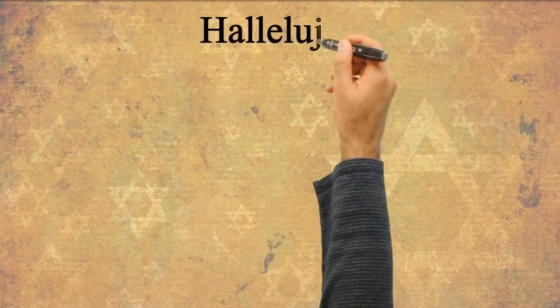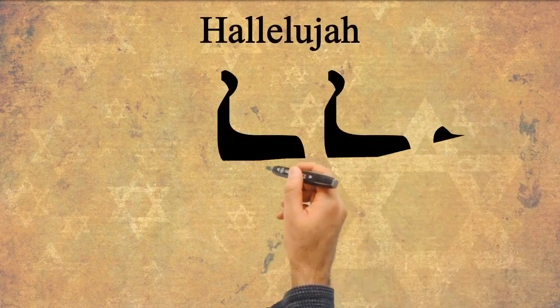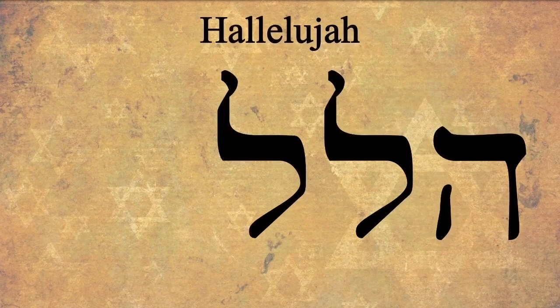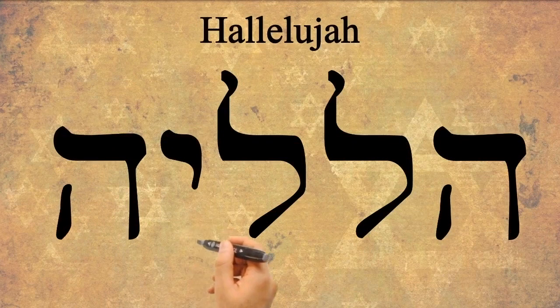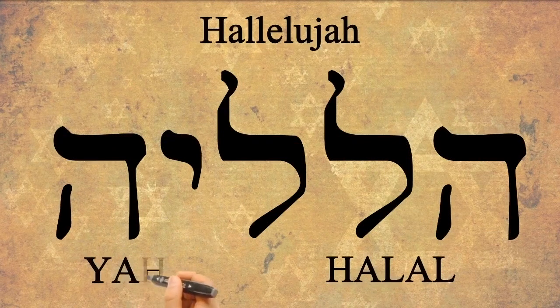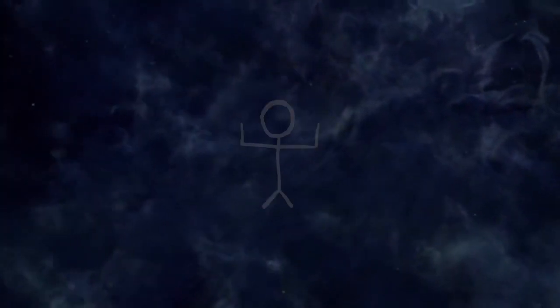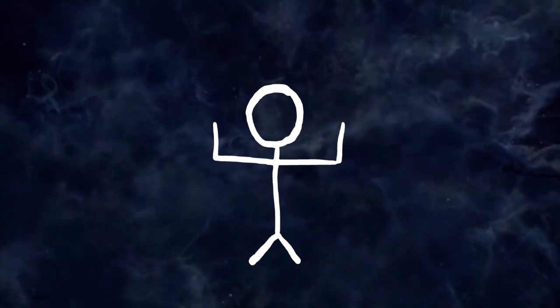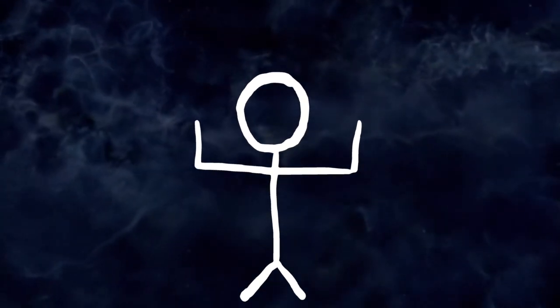The word Hallelujah has two parts. The first part comes from the word halal, meaning to be clear or shine, to show, boast, or celebrate. And the second part is YAH, the sacred name of God. So with the divine breath within us, we are to look and behold who God is and what He has done. This is worship.